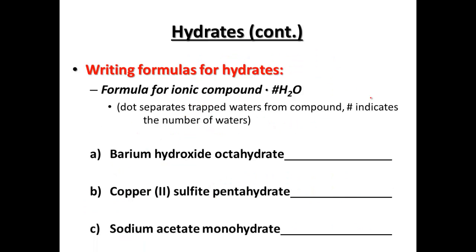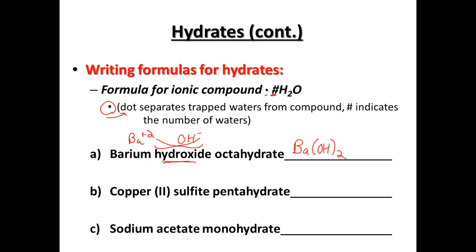Now going the opposite way — writing the formula. The key part for the formula is we have the number of waters, and a dot here to separate the waters that are trapped with the ionic compound; the number indicates those number of waters. First off, barium hydroxide: barium from the periodic table, group two is a plus two. Hydroxide from your gold packet is the polyatomic OH minus. When you criss-cross, we end up with the formula Ba(OH)₂. Since hydroxide is a polyatomic, it needs to be in parentheses with a two.